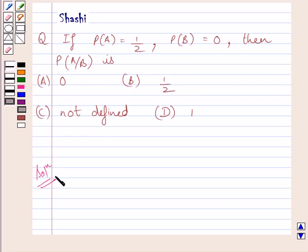Now we know that conditional probability of A when B has occurred is equal to probability of A intersection B upon probability of B.